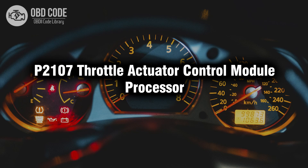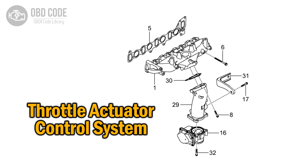Welcome. In this video we will talk about code P2107, its symptoms, causes and possible solutions. P2107 is a diagnostic trouble code that indicates an issue with the throttle actuator control module processor.